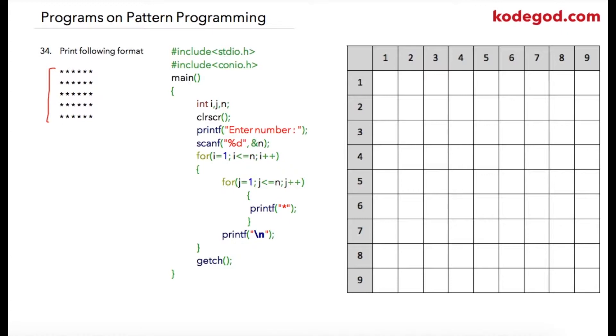We are going to print n stars on n number of rows. So suppose the user has entered 6 as input, then on 6 rows, 6 stars will be printed. So this is the expected output.